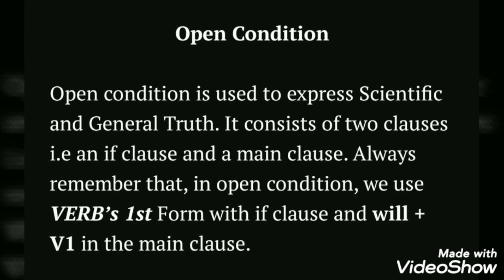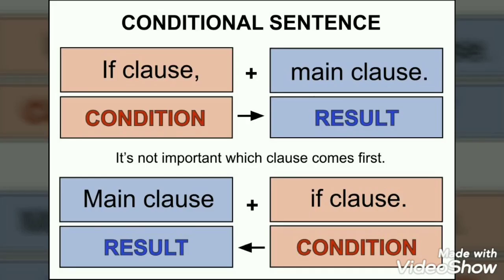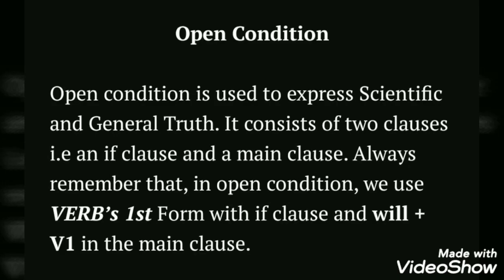The if-clause can come first, followed by a comma and then the main clause. Or, if the sentence starts with the main clause, then the if-clause comes after. Open condition shows general truth and scientific truth, and it consists of two clauses. In open condition, we use the verb's first form in the if-clause. If the sentence is negative, use 'do not' or 'does not' depending on the subject. In the main clause, we use 'will plus verb first form'.